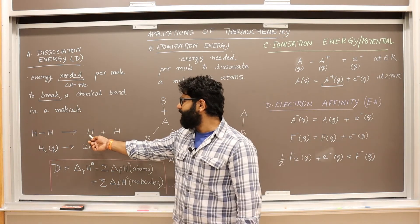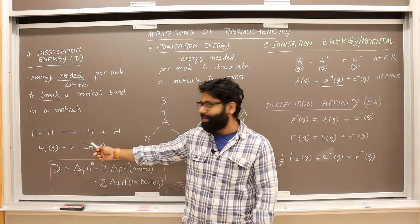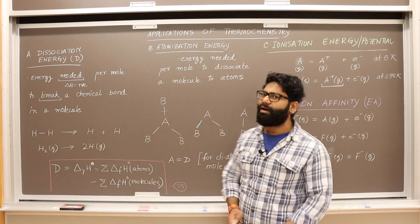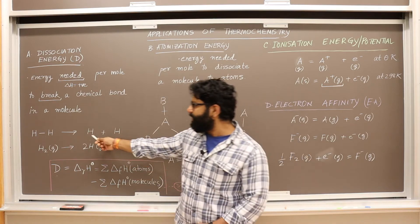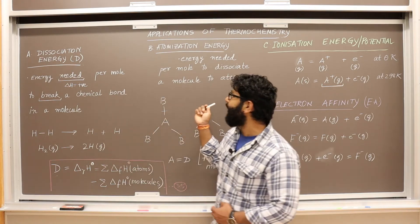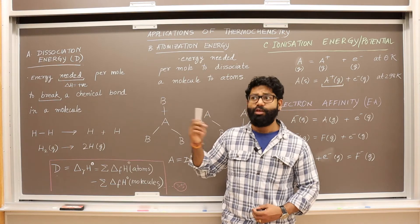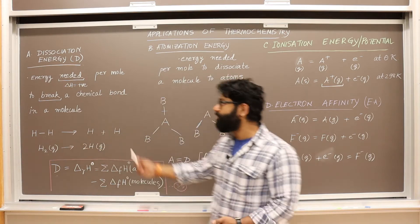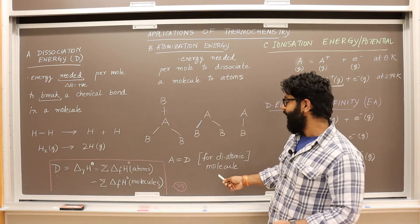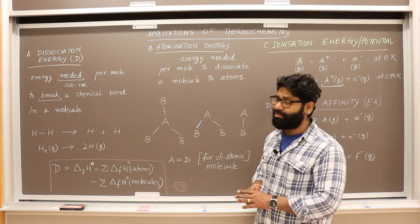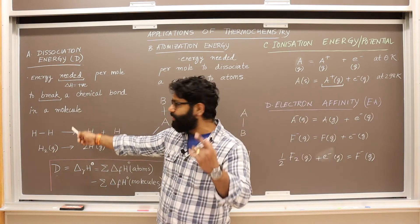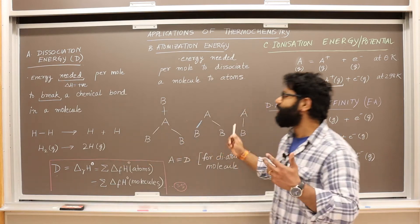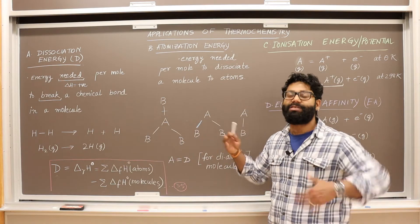So you might ask: in the case of a hydrogen molecule, you also get two atoms — how is dissociation energy different from atomization energy? In a case of a diatomic molecule, there is no difference between dissociation energy and atomization energy, because when you break just one chemical bond, you are getting the atoms. But this is not the case for all molecules in the universe — there can be other molecules which have more bonds.